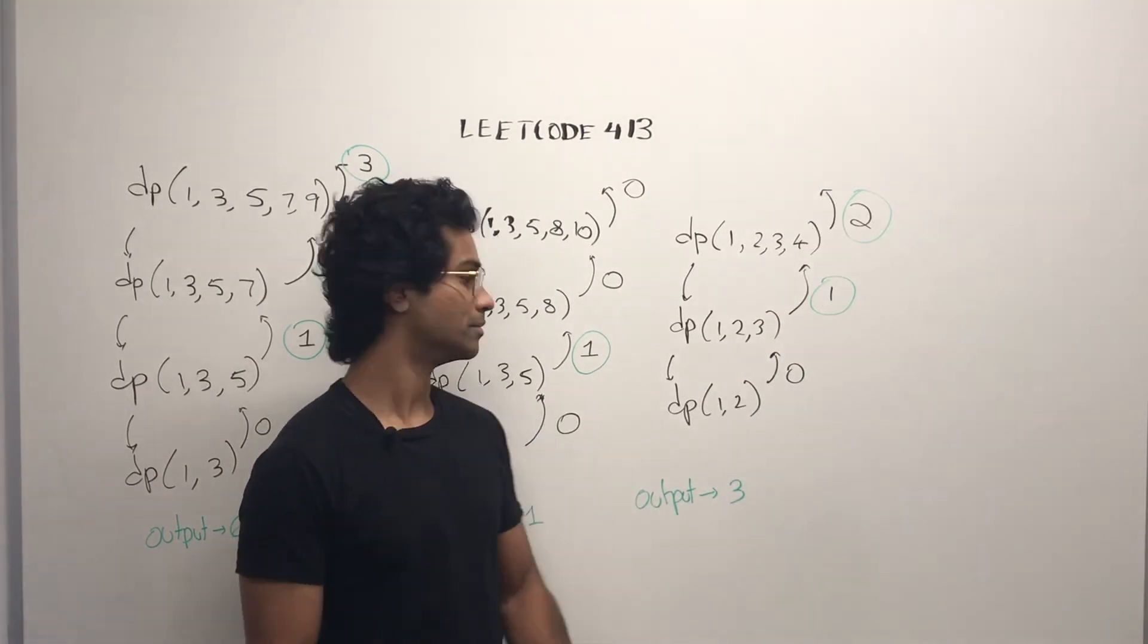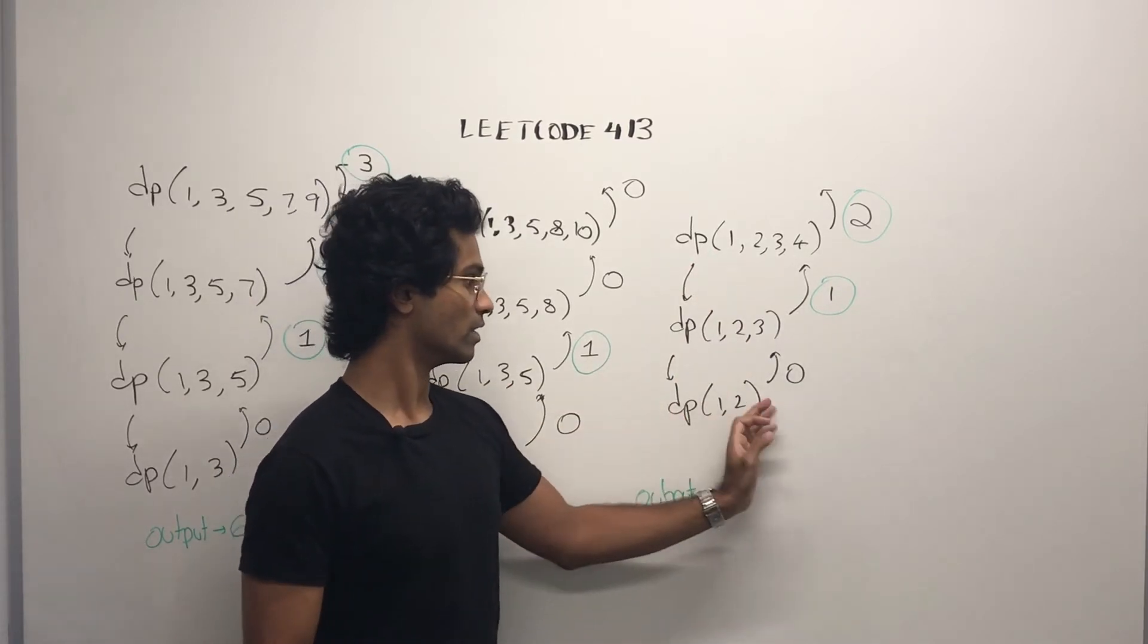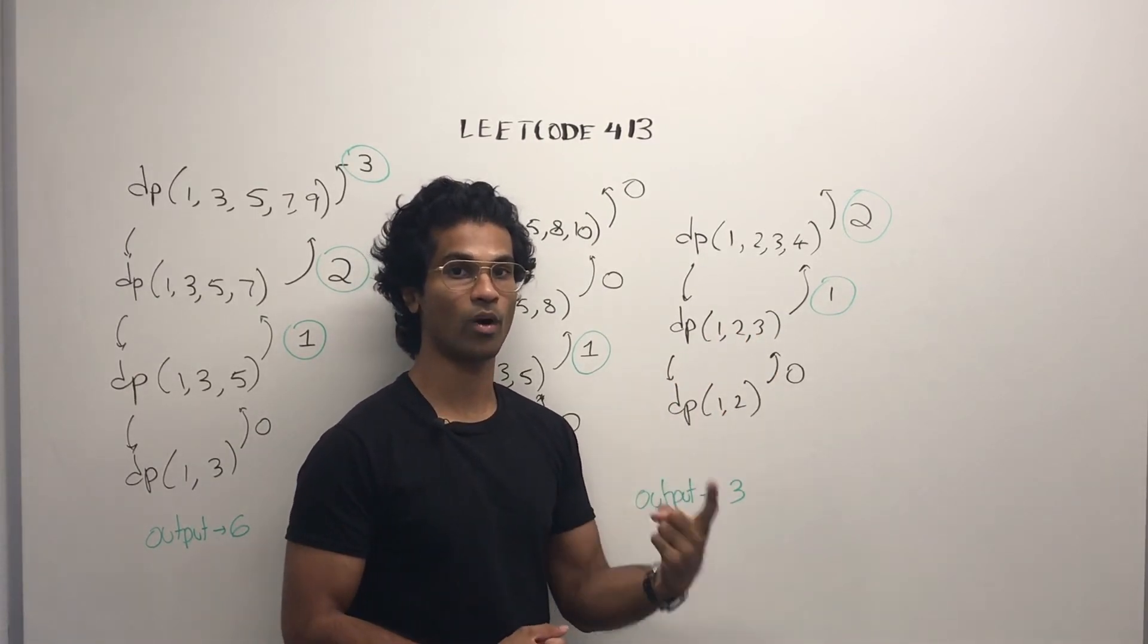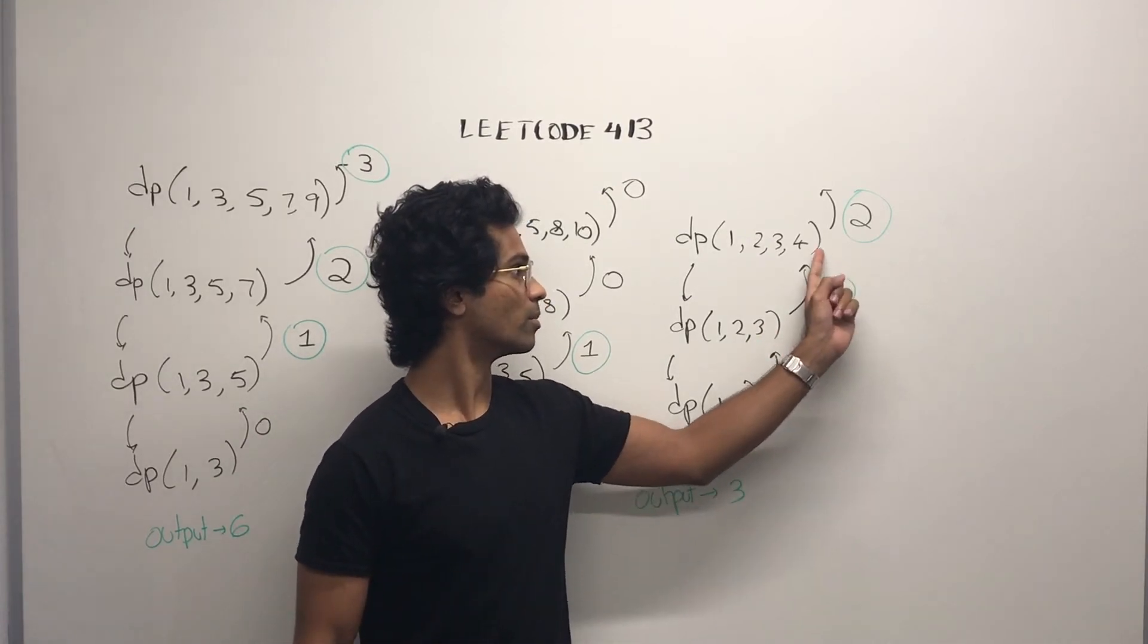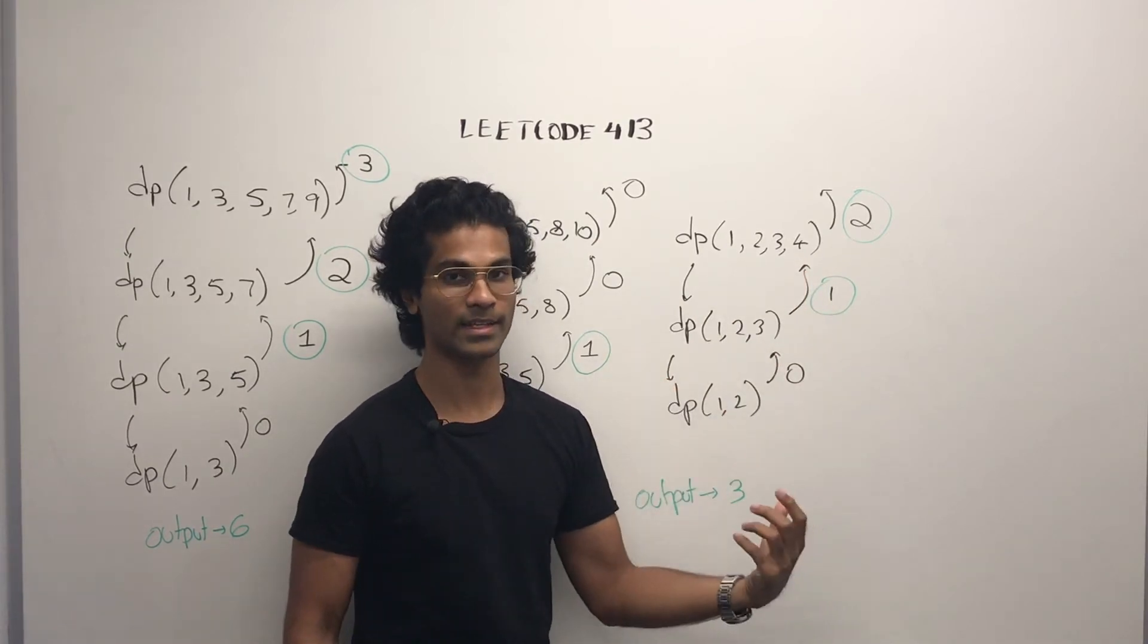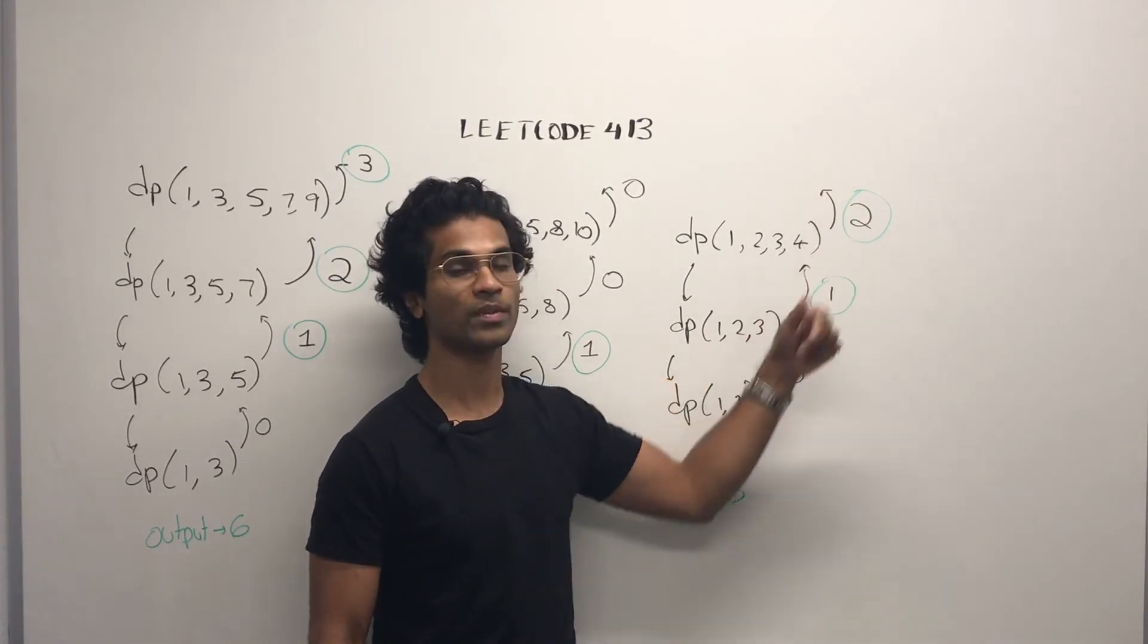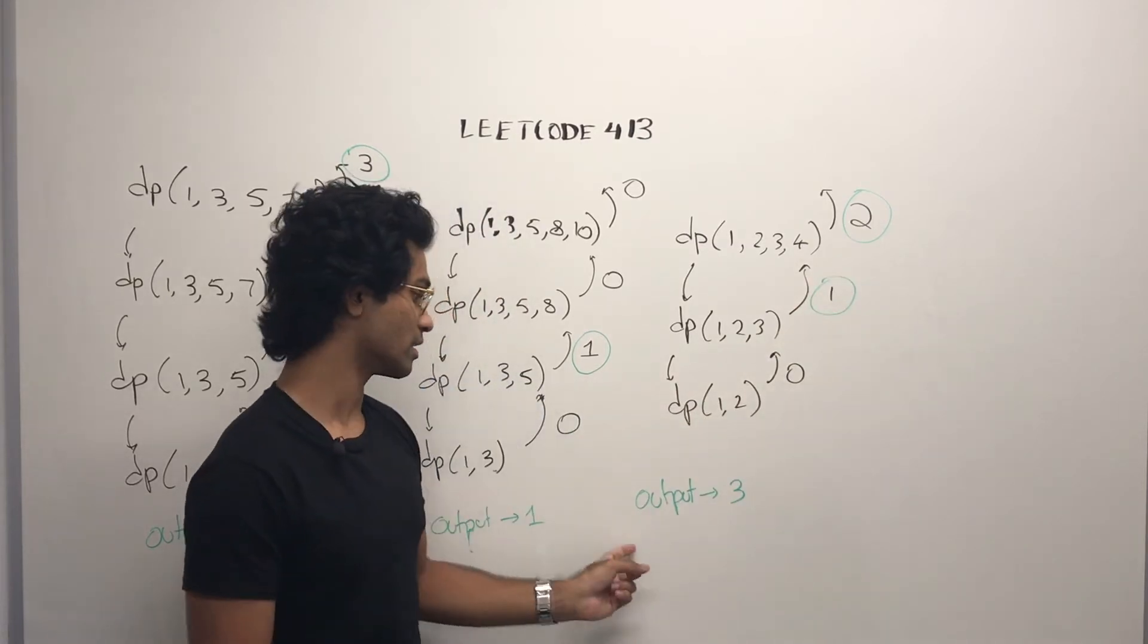Here's our last example. 1, 2, 3, 4 goes for 1, 2, 3, goes for 1, 2. This returns 0 because it's a base case. Then 3 minus 2 is the same as 2 minus 1. So it's going to add 1 to what the base case gave it and return that. This is going to return 1 up here, and this is going to see, okay, is 4 minus 3 the same as 3 minus 2? It is. So it's going to add 1 to whatever the child returned, and it's going to pass up 2.